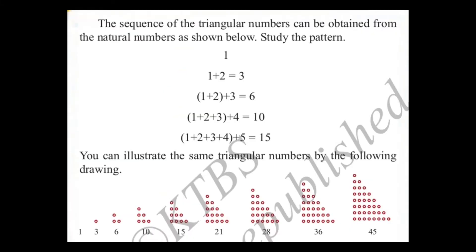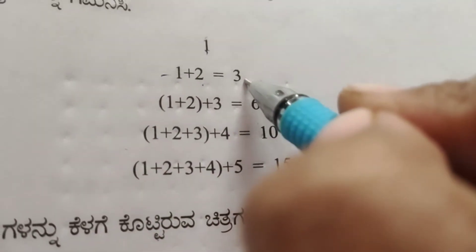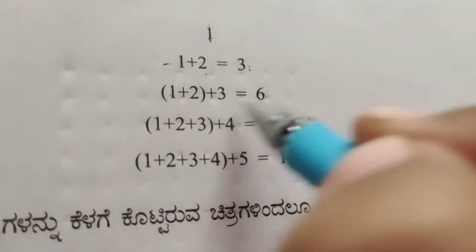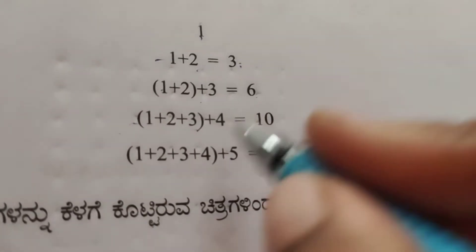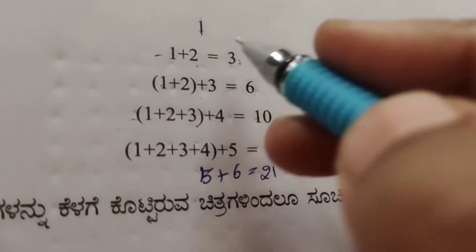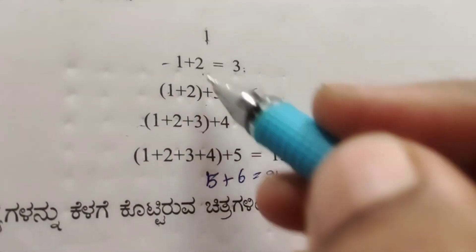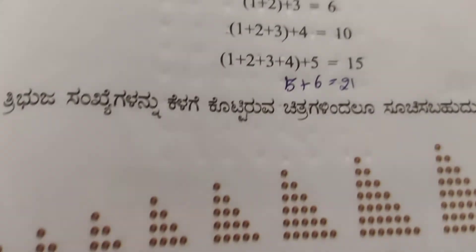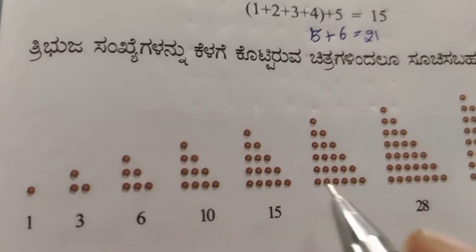Let's observe the pattern in which triangular numbers are written: 1, then 1 plus 2 is 3, 3 plus 3 is 6, 6 plus 4 is 10, 10 plus 5 is 15, 15 plus 6 is 21. We keep adding consecutive numbers: 2, 3, 4, 5, 6. Continuing this way triangular numbers form: 28, 36, 45.